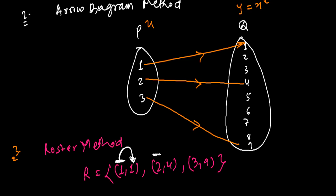Similarly, with whom is 2 related? 2 is related with the square of itself, that is 4. Similarly, 3 is related with the square of itself, that is 9.